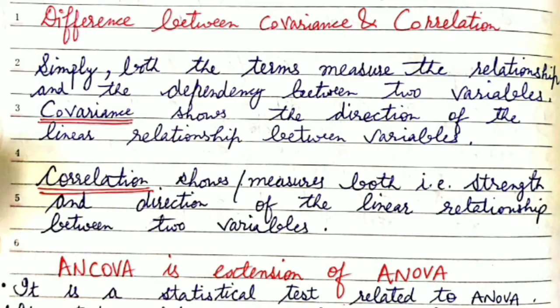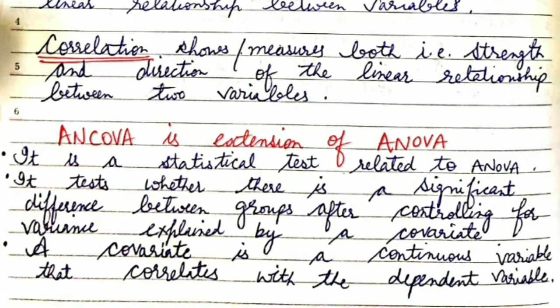What is the difference between covariance and correlation — are these the same or different? Both terms measure the relationship and dependency between two variables, but covariance shows the direction of the linear relationship between variables, while correlation measures both the strength and direction of the linear relationship between two variables.